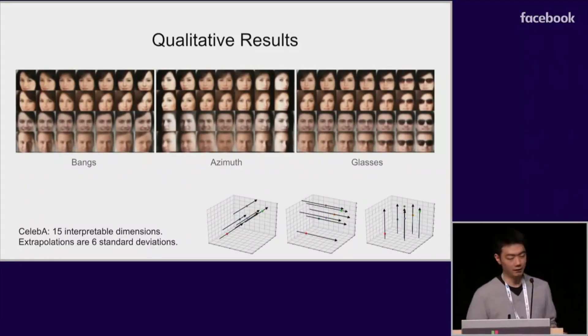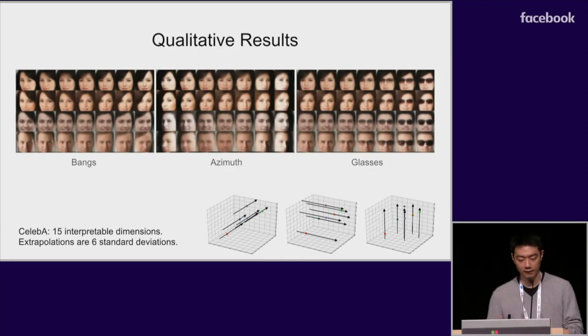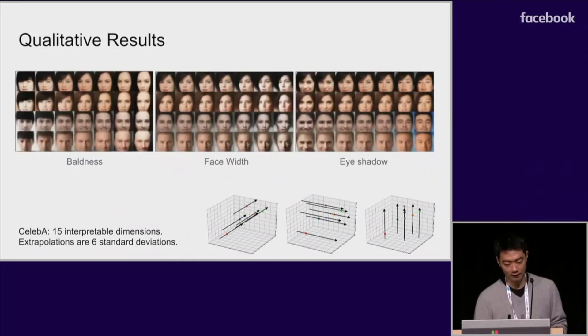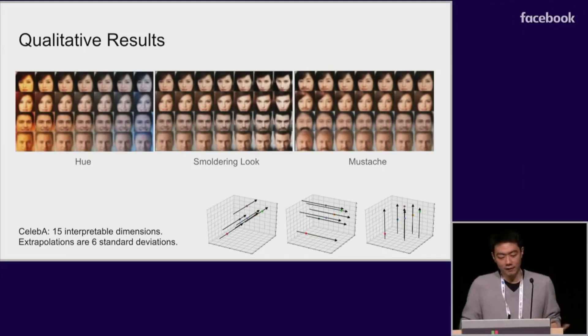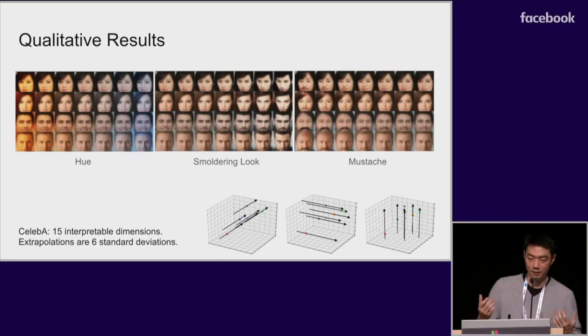We ran TCVAE on face images of celebrities, letting it choose the number of important factors. Of the 17 factors that it used to explain the data, we found that 15 of them had clear interpretations. Here we visualized four test images as their representations are changed along axis-aligned trajectories. And for each dimension, we extrapolated well beyond the data distribution to emphasize each characteristic. So I'm just going to quickly scroll through these in the interest of time. Because the algorithm is completely unsupervised, it sometimes needs to be creative to find independent factors for describing the data. It found interesting factors such as the hue and smoldering looks. It also found latent axes that can be used to generate bald females or mustache females, which are rare cases in the data distribution.